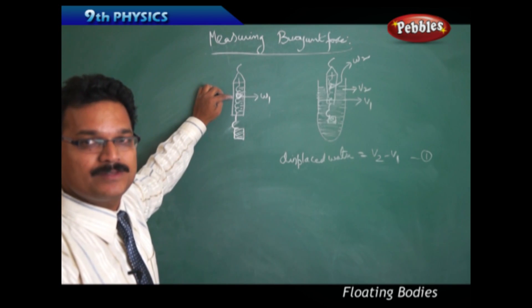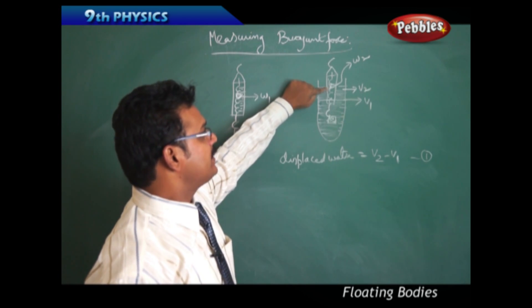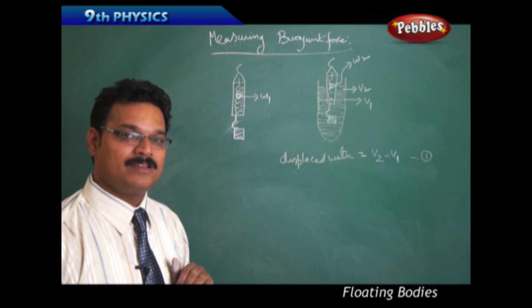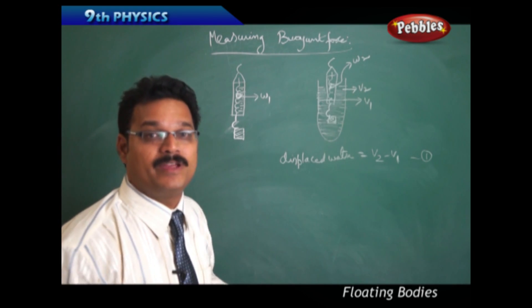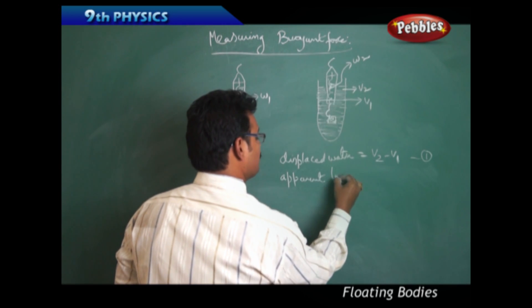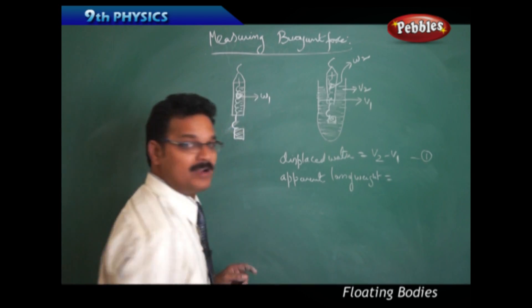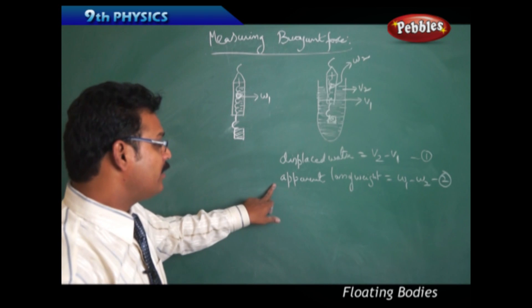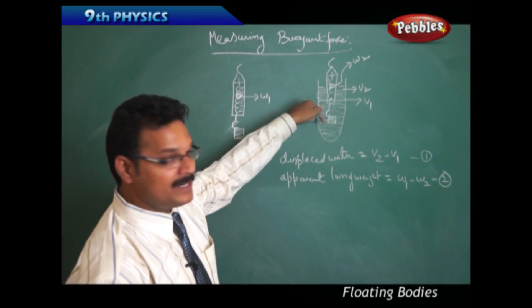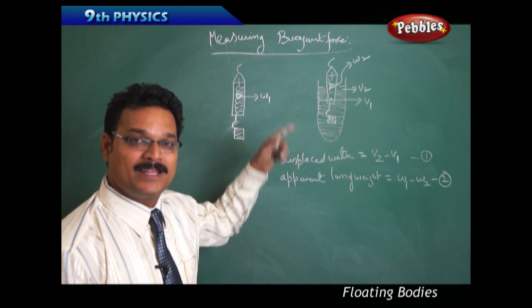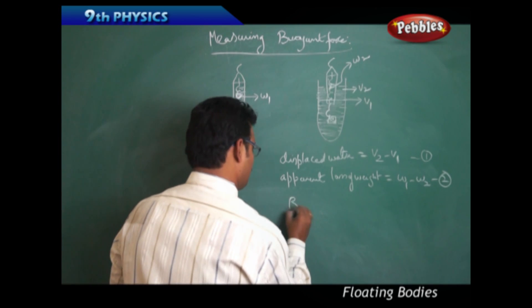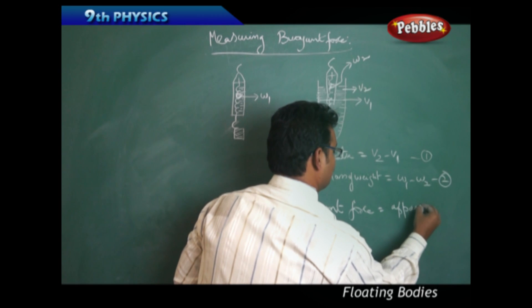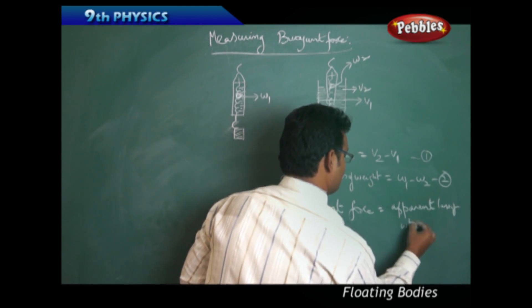The weight W1 was, say, 20 grams. After immersing in water, the pointer shows 15 grams — the weight decreased. The body lost some weight, and this is called the apparent loss of weight. The apparent loss of weight equals W1 minus W2. Now, why did the body lose weight? Whenever a body is inside a liquid, it experiences an upward buoyant force, and that buoyant force equals the apparent loss of weight.